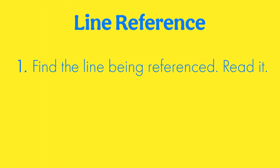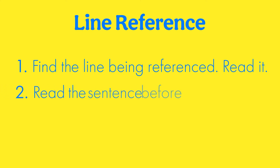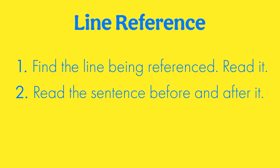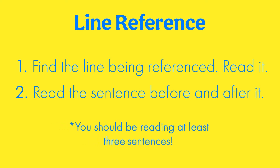When you're doing a line reference question, you're going to go to the line being referenced, read that whole sentence, then you're also going to read the sentence before and the sentence after. You're going to read a minimum of three sentences — and that's called contextualizing. Once you contextualize, go back to your answer choices and you're going to very easily see what the right answer is because you're looking for that exact match. You're going to find something in that three-sentence context that matches one of the answer choices.